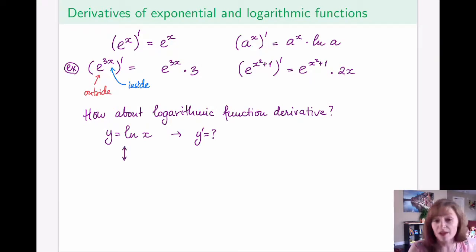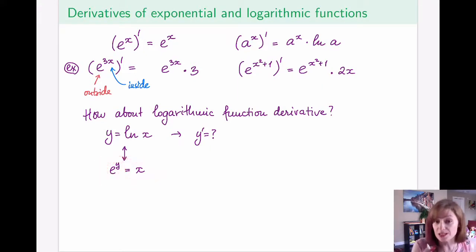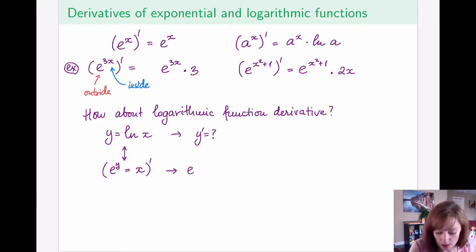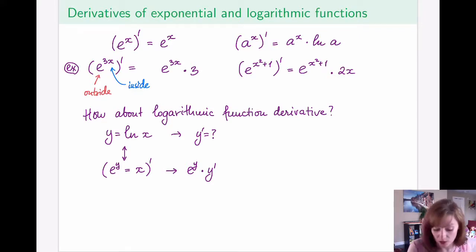As the very first step, rewrite y = ln(x) as the exponential function: e to the power y equals x. Now I can apply implicit differentiation to this entire equation. On the left-hand side, we have e to the power of something, so its derivative is itself — but the inside is y, which is a function of x — so we follow up with y prime. The derivative of the right-hand side, x, is just 1.